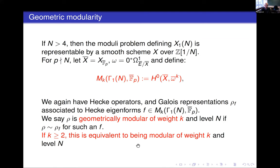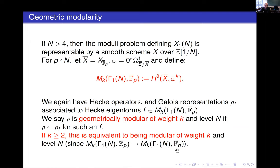If k is at least two, there's actually no difference between the two definitions—geometrically modular or modular of weight k—because by Riemann–Roch, every section in characteristic p lifts to characteristic zero. Combined with a little commutative algebra argument, any eigenform in characteristic p lifts to a characteristic zero eigenform. So you don't get any more Galois representations this way if the weight is at least two, but it does make a difference for weight one.